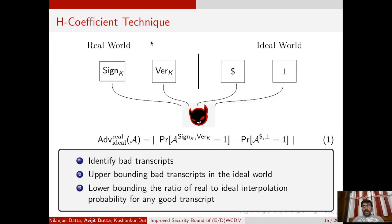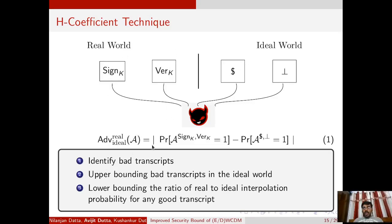If the adversary interacts with the ideal world, it interacts with the random oracle and the abort oracle. In the real world, querying with message m returns the corresponding tag from the signing oracle, and the verification oracle says yes or no depending on whether the message-tag pair is valid. In the ideal world, querying the random oracle with message m returns a randomly sampled tag, while querying the abort oracle with a message-tag pair always returns abort. The distinguishing advantage of adversary A to distinguish the real world from the ideal world is then defined accordingly.